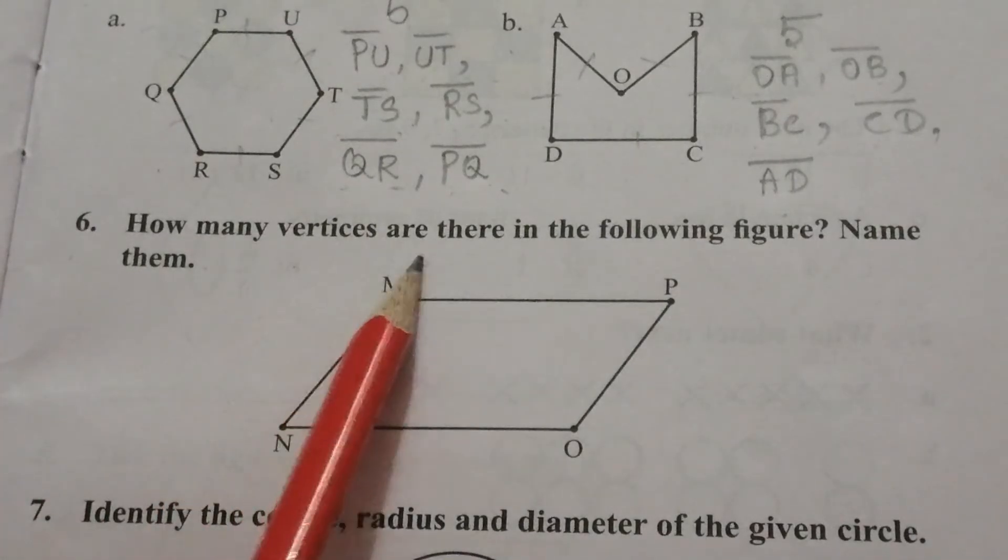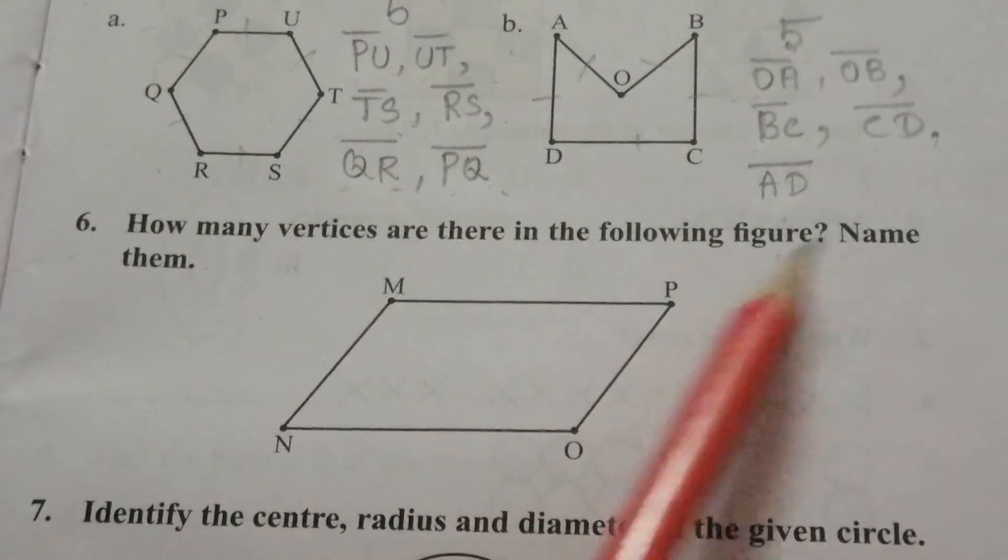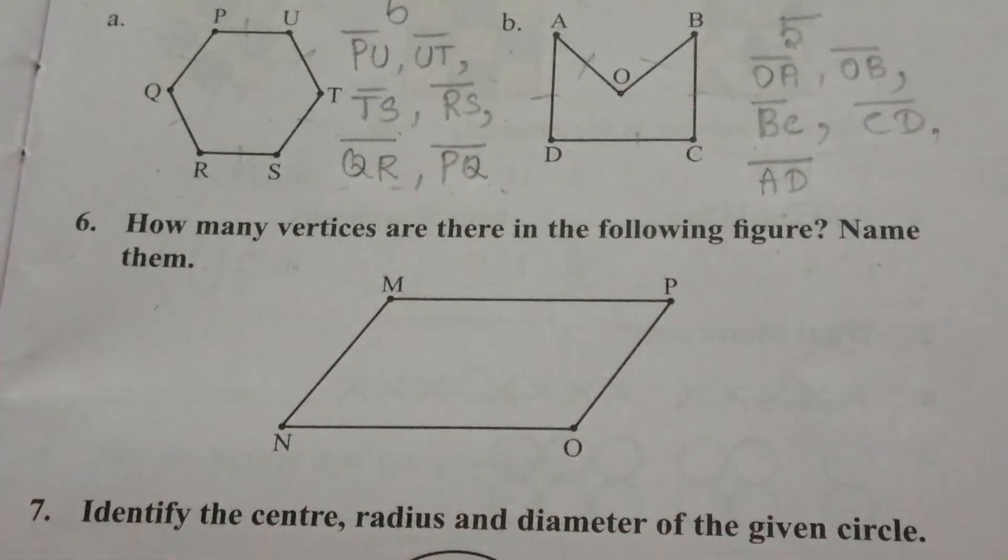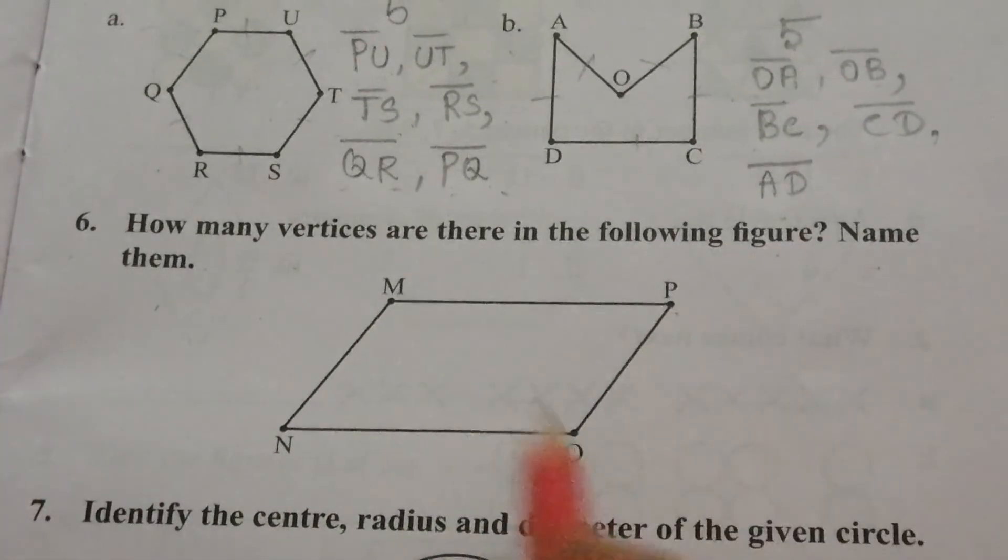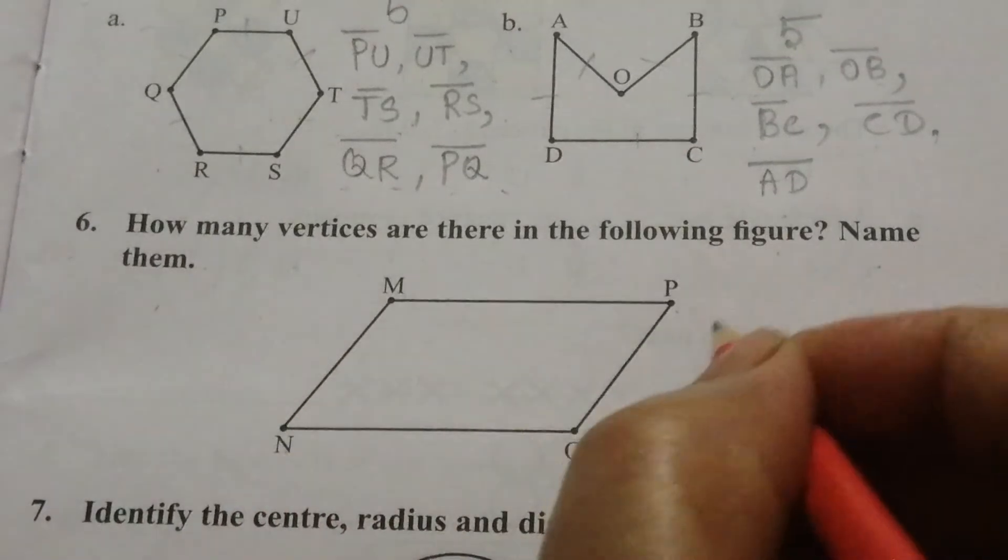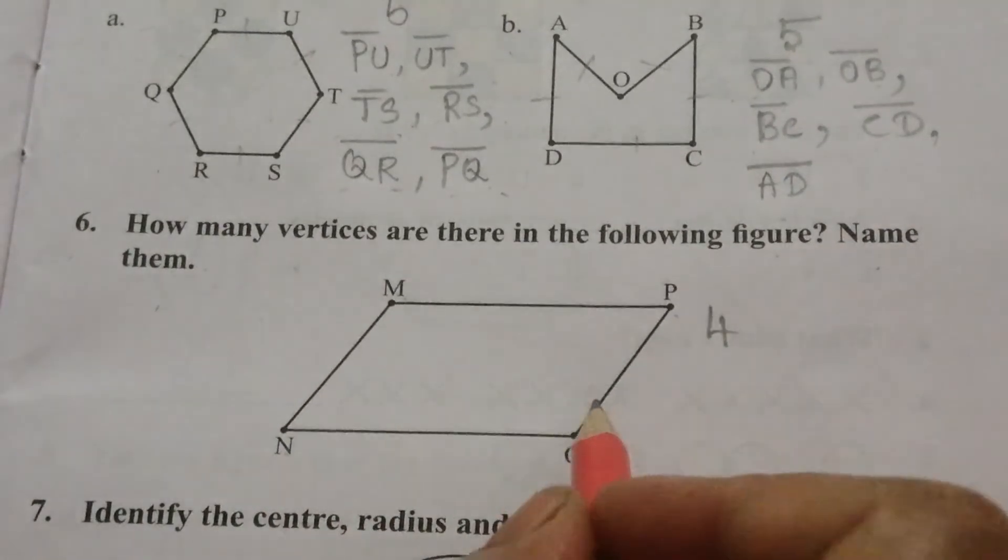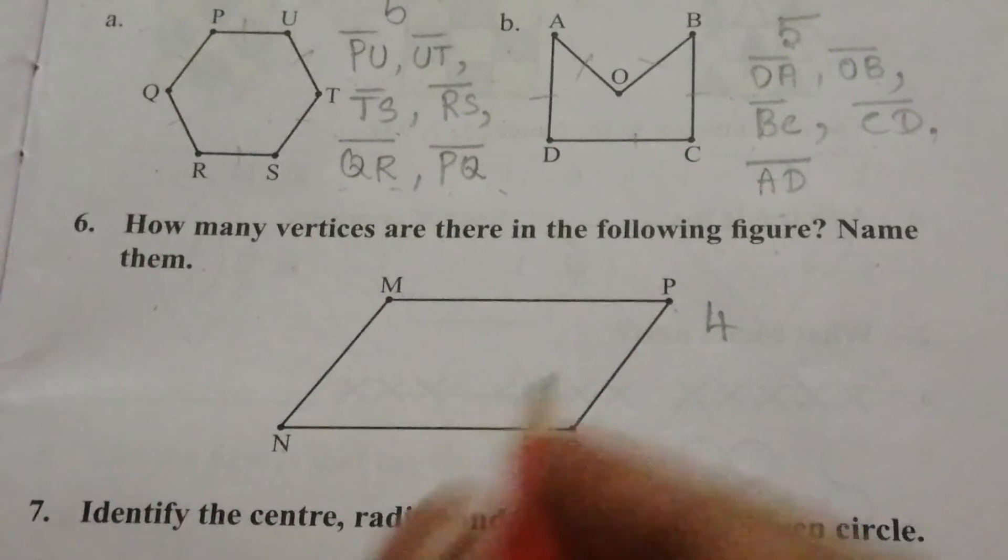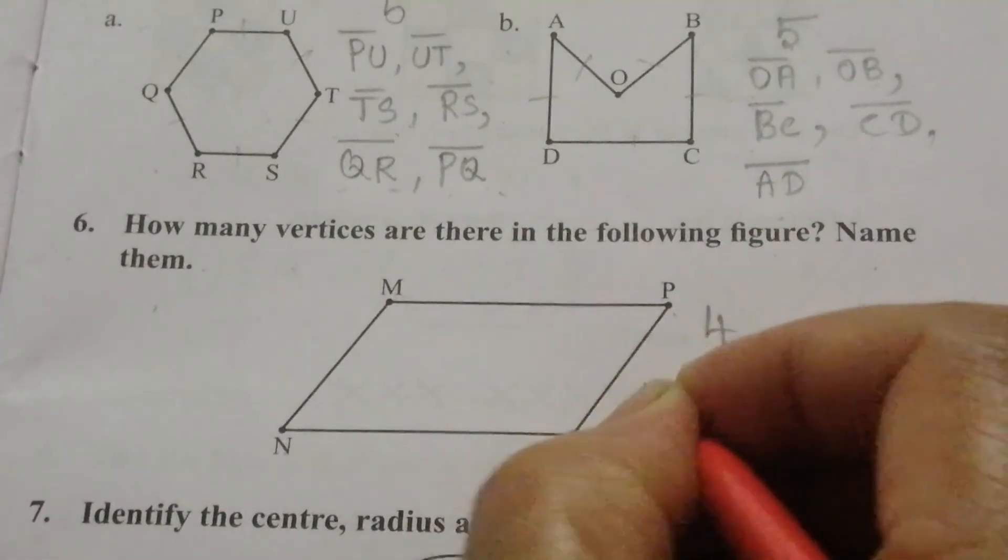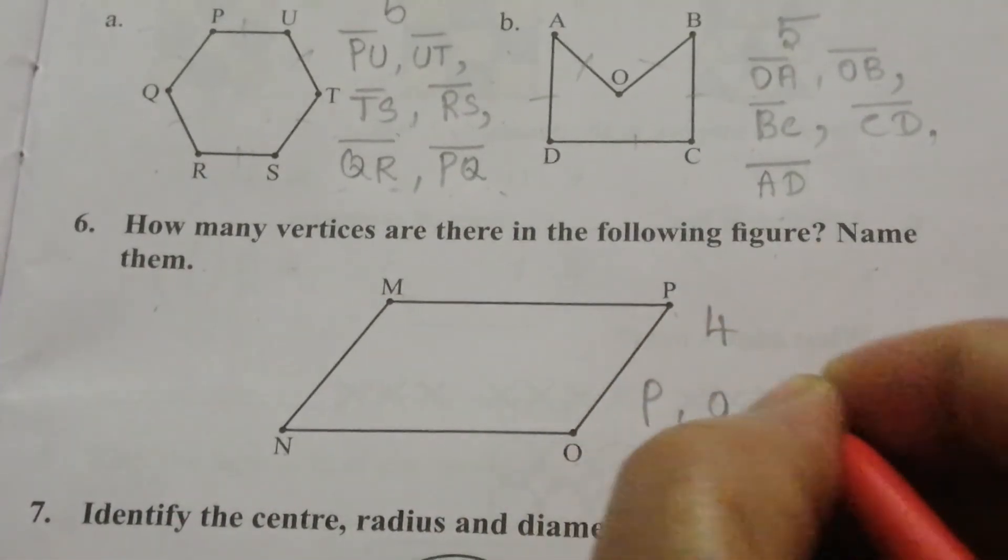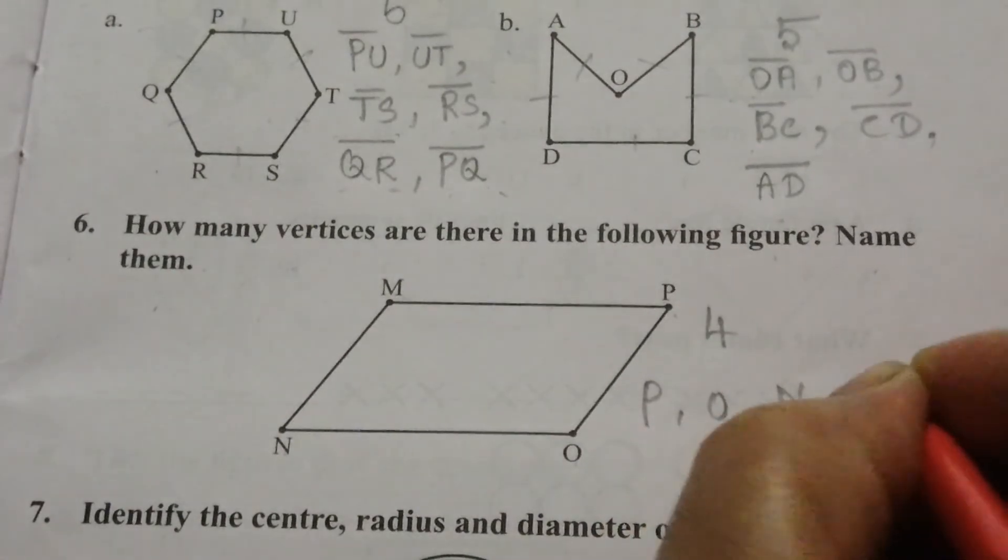6. How many vertices are there in the following figure? Name them. How many vertices? 1, 2, 3, 4. Four vertices are here, and the vertex names are P, O, N, M.